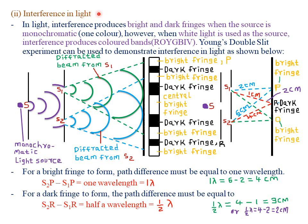Today we are continuing with the fourth property of waves, which was interference of waves. In our previous class, we looked at interference in sound waves. Today we are looking at interference in light. In light, interference produces what we call bright and dark fringes when the source of light is monochromatic. The word mono means one, and chromatic means color. Therefore, a monochromatic source of light is a source that produces light of just one specific color.